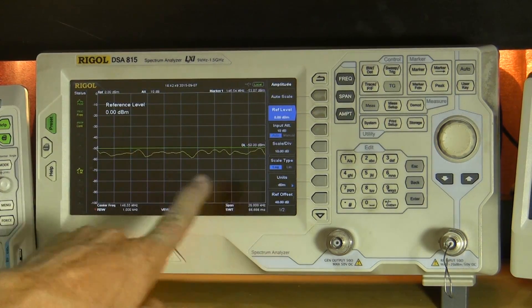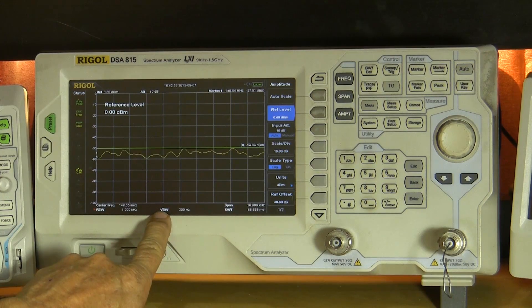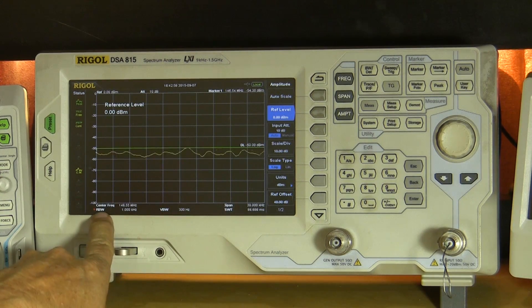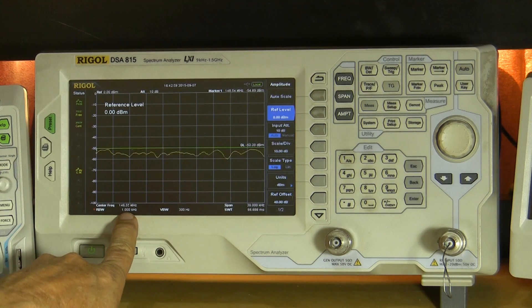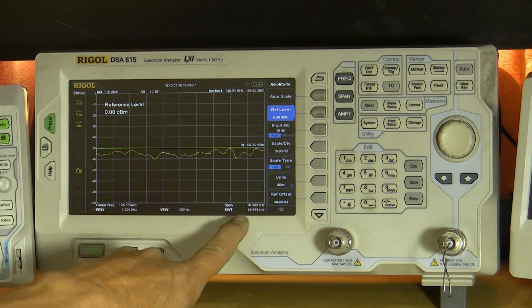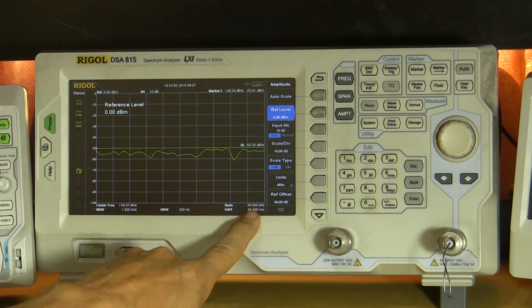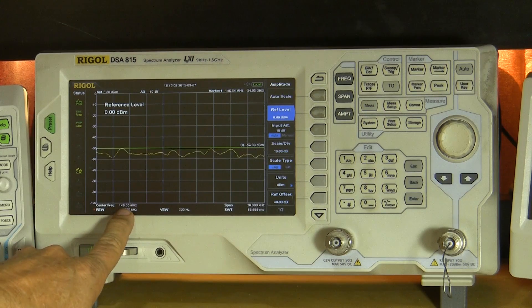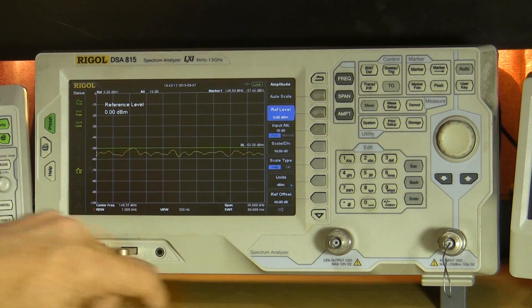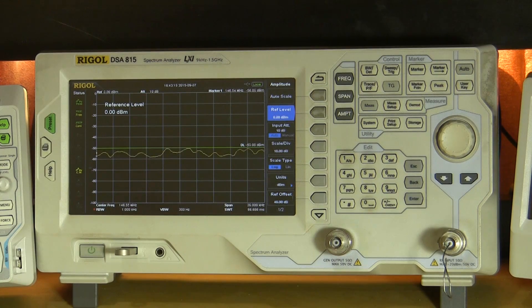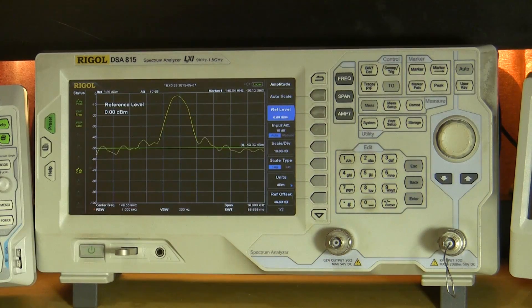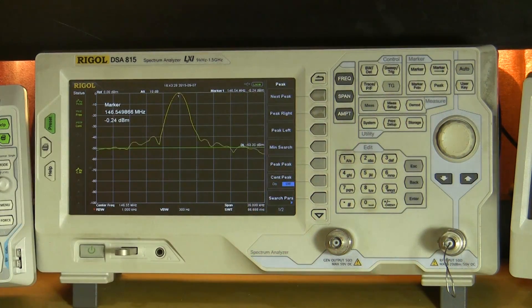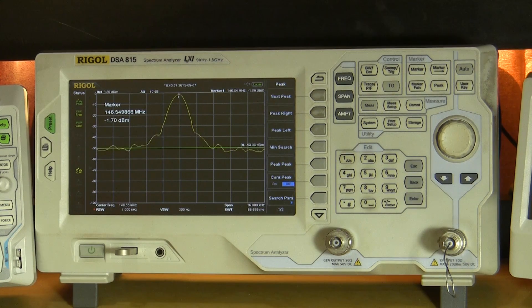Now for these tests I've set this up for video bandwidth of 300 Hertz and receive bandwidth of 1 kilohertz just so we can look at the spectrum itself. My span is 20 kilohertz here and the center frequency is 146.55. So we'll see how that looks when I key up the radio here. We'll do a peak here. Okay, we're very close in frequency and so there you go.